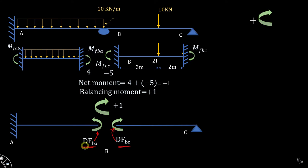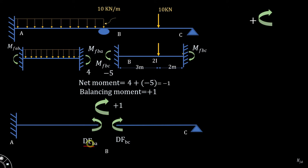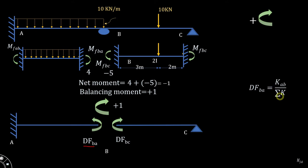To get a distributed moment value, multiply the balancing moment by the corresponding distribution factor. The distribution factor DFBA, which has B as its near point and A as its far point, is equal to K_AB divided by the summation of K, where K is the stiffness factor. The summation K equals K_AB plus K_BC.